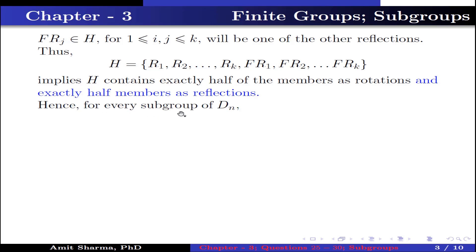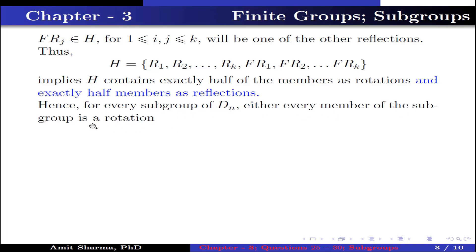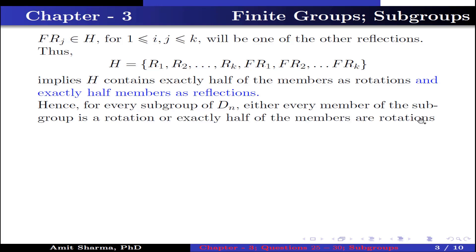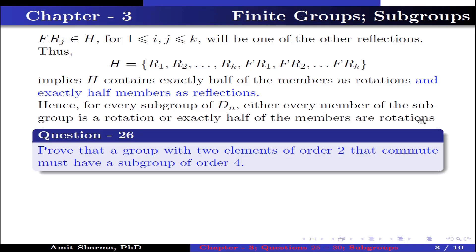Hence for every subgroup of Dₙ, either every member of the subgroup is a rotation or exactly half of the members of the subgroup are rotations.